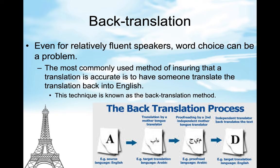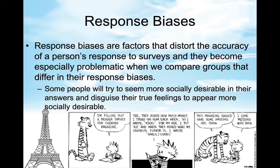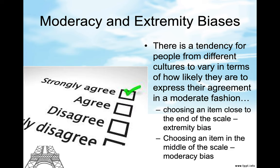Even for relatively fluent speakers, word choice can be a problem. The most commonly used method of ensuring that a translation is accurate is to have someone translate the translation back into English. This technique is known as the back translation method. Response biases are factors that distort the accuracy of a person's response to surveys, and they become especially problematic when we compare groups that differ in their response biases. Some people will try to seem more socially desirable in their answers and disguise their true feelings. Choosing an item close to the end of the scale is known as extremity bias; choosing an item in the middle of the scale is known as moderacy bias.